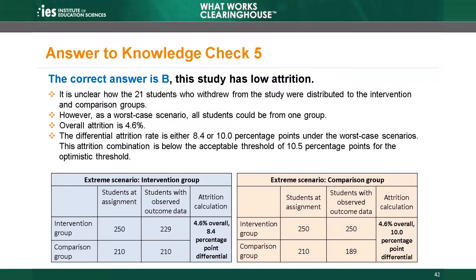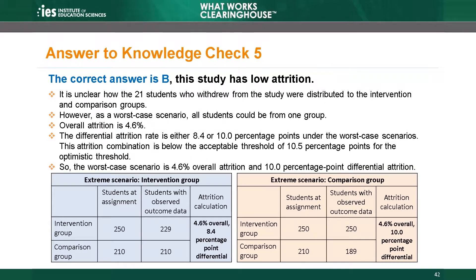If we assume that all 21 students were in the comparison group, we find differential attrition is 10.0 percentage points. Using the worst-case differential attrition result of 10.0 percentage points, the study has low attrition under the optimistic threshold. In this situation, the WWC would not need to ask the study authors how many students withdrew from each group. No matter how the students divide, attrition will still be low because it was low in the worst-case scenario.